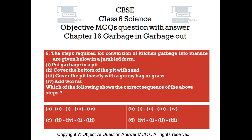Question number 6. The steps required for conversion of kitchen garbage into manure are given below in jumbled form: 1. Put garbage in a pit. 2. Cover the bottom of the pit with sand. 3. Cover the pit loosely with a gunny bag or grass. 4. Add worms. Which of the following shows the correct sequence of the above steps?